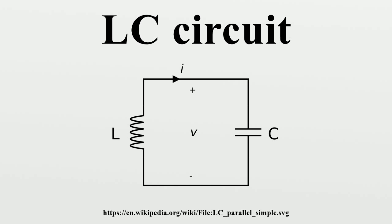Resonance occurs when an LC circuit is driven from an external source at a frequency at which the inductive and capacitive reactances are equal in magnitude. The frequency at which this equality holds for the particular circuit is called the resonant frequency. The resonant frequency of the LC circuit is where L is the inductance in henries, and C is the capacitance in farads. The angular frequency has units of radians per second. The equivalent frequency in units of Hz is given accordingly. LC circuits are often used as filters. The LC ratio is one of the factors that determines their Q, and so selectivity.